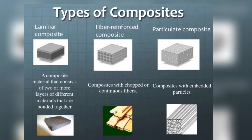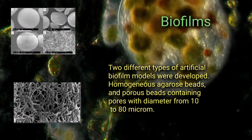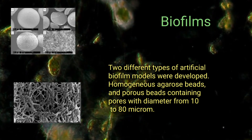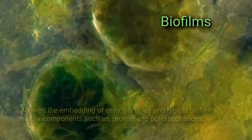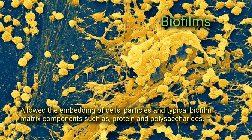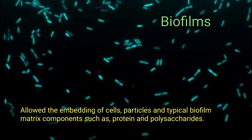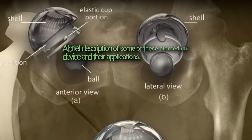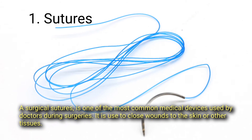Two different types of artificial biofilm models were developed: homogeneous agarose beads and porous beads containing pores with diameters from 10 to 80 micrometers, which allowed the embedding of cells, particles, and typical biofilm matrix components such as proteins and polysaccharides.